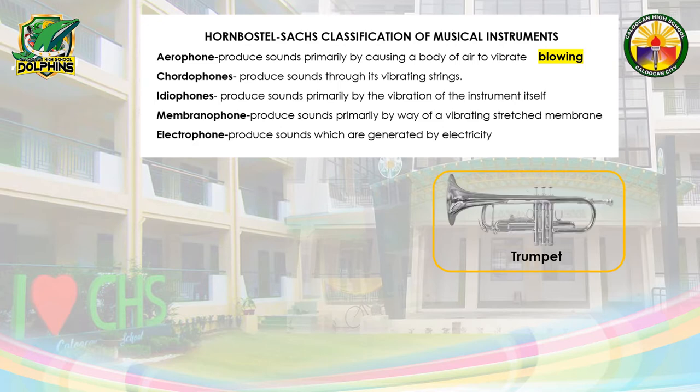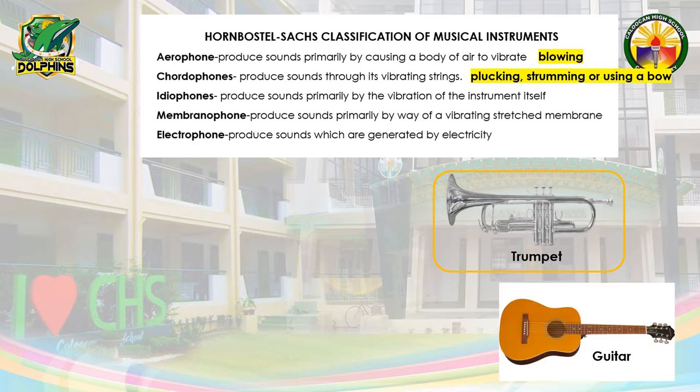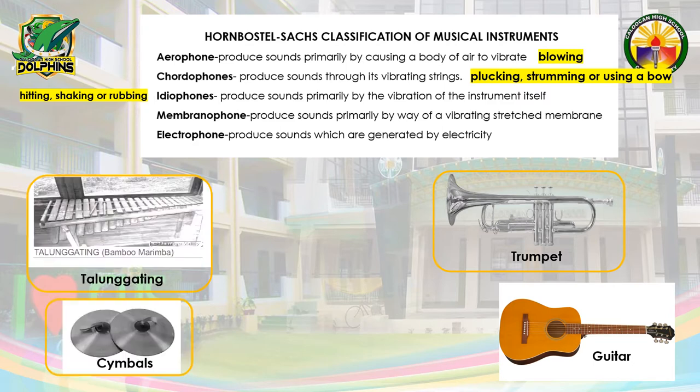Chordophones are those instruments with strings that can produce sounds by means of plucking, strumming, and using a bow. Examples are the guitar. Idiophones are instruments that can produce sounds by means of hitting, shaking, or rubbing. Examples are the talongo and cymbals.